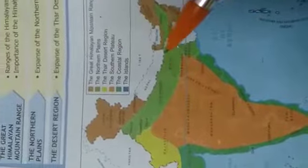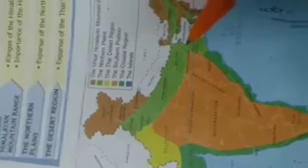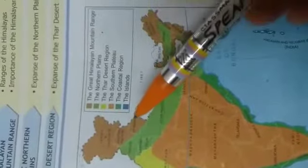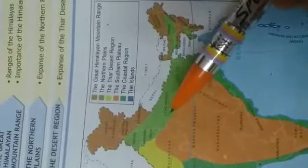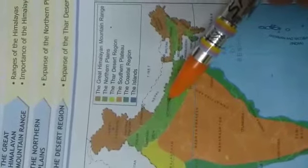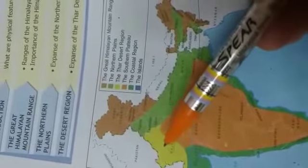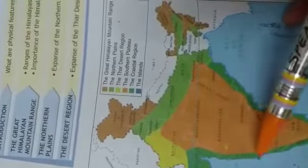So, these are the five physical features of India. To revise: number 1, the Northern Mountains; then the Northern Plains or the Gangetic Plains; then the Southern Plateaus; the Great Indian Desert also known as Thar Desert; and the coastal plains and islands — Lakshadweep Islands in the Arabian Sea and Andaman and Nicobar Islands in the Bay of Bengal.